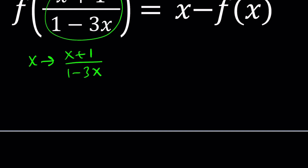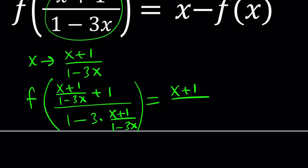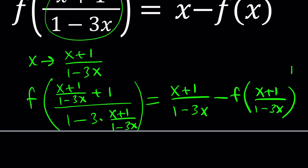When we do that, on the left-hand side inside the parentheses we have x plus 1 divided by 1 minus 3x, plus 1, and that quantity is divided by 1 minus 3 times x plus 1 divided by 1 minus 3x. On the right-hand side we just replace x with that same expression. That's going to be our first equation.